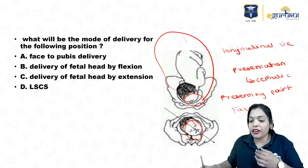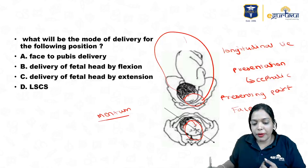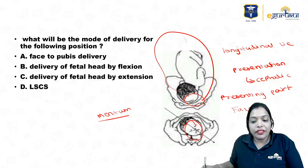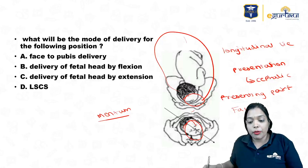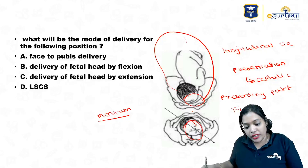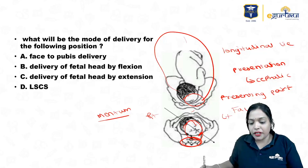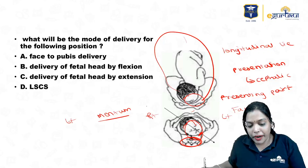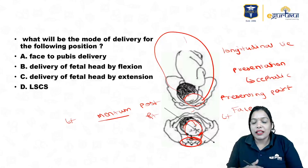In face presentation, what is the denominator? The denominator is the mentum. So now I have the middle fill-in-the-blank: the denominator is the mentum. Now check which side the mentum is seen. If it is towards the pubic symphysis, you call it mento anterior; if towards the sacral promontory, you call it mento posterior. Here the mentum is towards the sacral promontory, and this is the right side of the patient, this is the left side of the patient — so the mentum is facing the left side and posterior. This is left mento posterior.